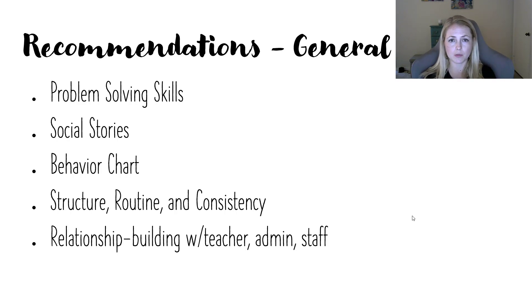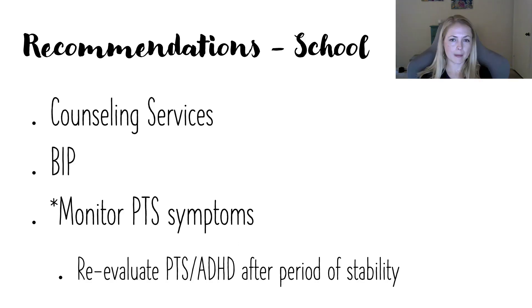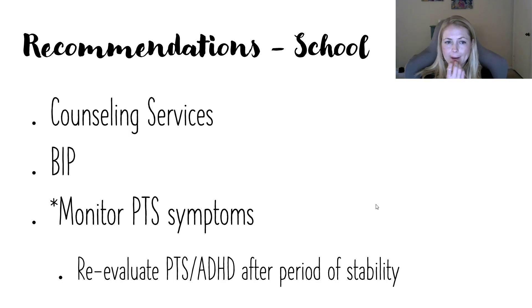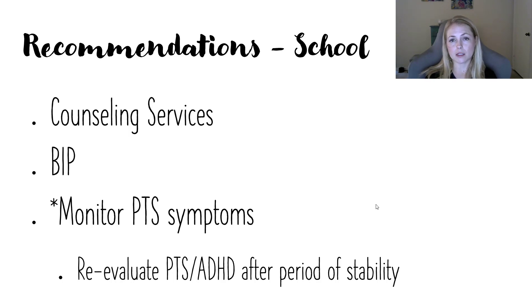Explicit relationship building is also key. There's a school I saw in California where principals come eat lunch with kids every once in a while and really get to know them. Getting to know kids and building a relationship with them as people, really making an effort. At school they recommended counseling services — if the child doesn't qualify for special education, maybe there's a social skills group. Definitely a behavior intervention plan and positive behavior supports for this kiddo — he's a prime candidate for a BIP, which you don't need special ed for. He can have a BIP regardless of what category he goes under. And huge: monitor the symptoms.